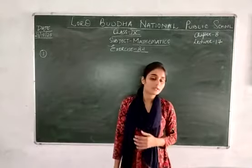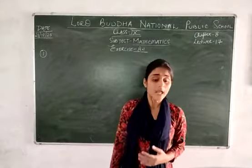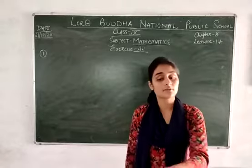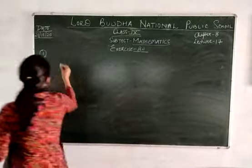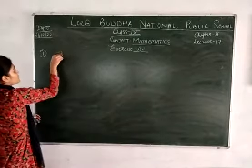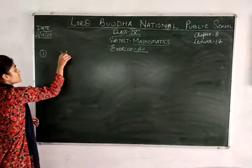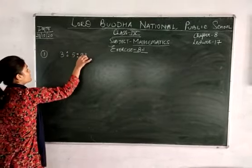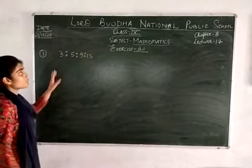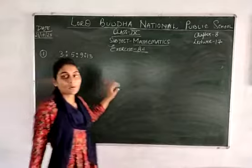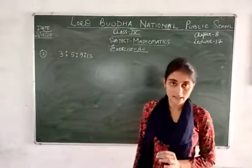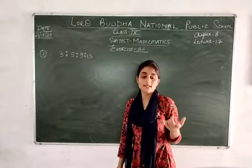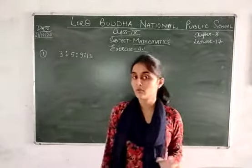Let's start with question number 1. The angles of a quadrilateral are in the ratio 3 : 5 : 9 : 13. So the four angles of the quadrilateral are in ratio 3, 5, 9, 13. And it is asking you to find all the angles of the quadrilateral.